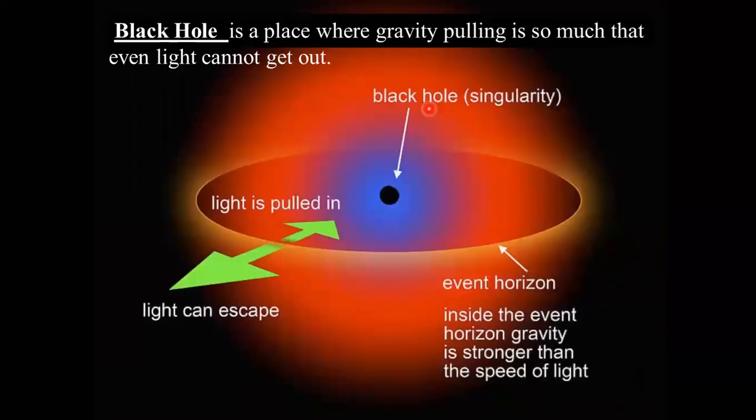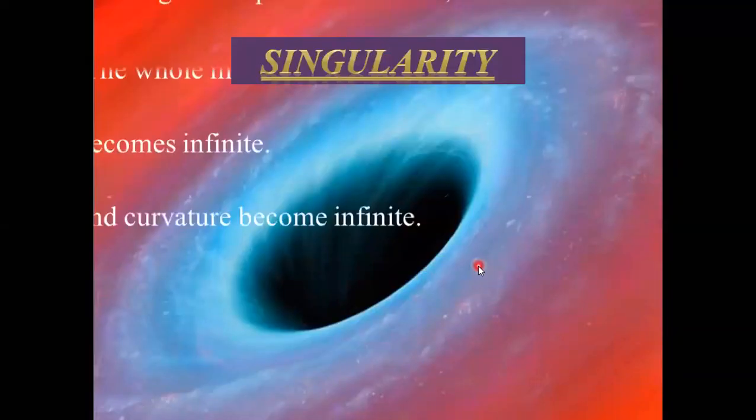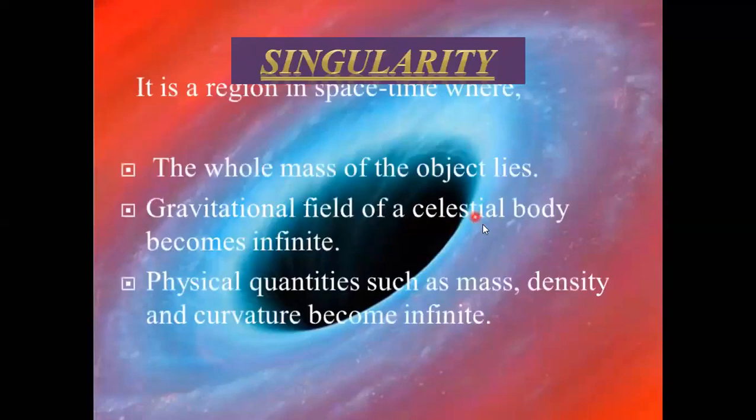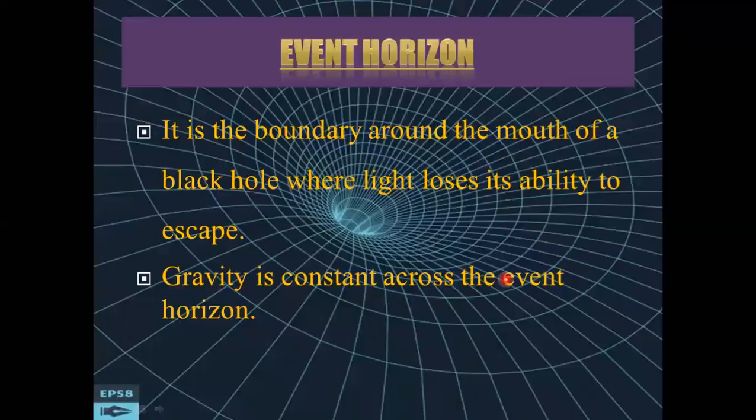A black hole is a place where the gravity pull is so much that even light cannot get out. As you can see on the screen, a black hole has two main regions. What is singularity? It is a region in space-time where the whole mass of the object lies. The event horizon is the boundary around the mouth of a black hole where light loses its ability to escape.